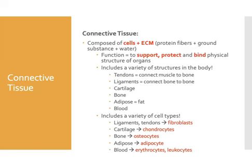There are many different structures in the body made of connective tissue: tendons, ligaments, cartilage, bone, adipose or fat tissue, and blood. Connective tissue is much more varied in its structure than epithelial tissue. One of the biggest differences between connective tissue and epithelial tissue is the cell type. In epithelial tissue we see only one type of cell—taking different shapes like squamous, cuboidal, or columnar—but in connective tissue we see many different kinds of cells for all the different structures it forms.